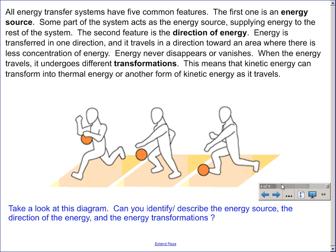All energy transfer systems have five common features. The first one is an energy source — some part of the system acts as the energy source, supplying energy to the rest of the system. The second feature is the direction of energy. Energy is transferred in one direction, and it travels towards an area where there is less concentration of energy.